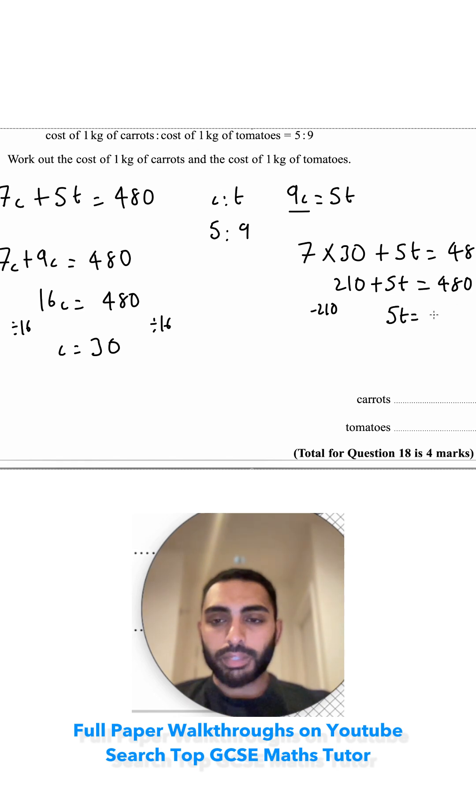So 5t is equal to 270. Being multiplied by 5, so divide by 5. When t is equal to, instead of dividing by 5, divide by 10, which is 27, and then double it, which would be 54. So t is equal to 54, and c is equal to 30.